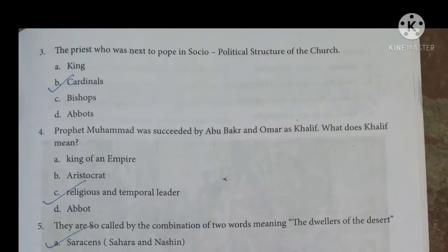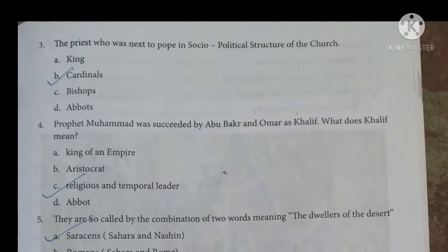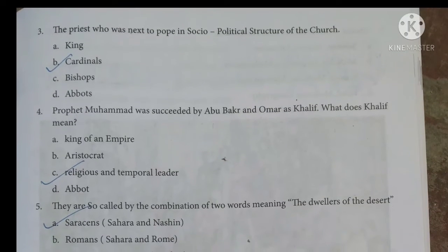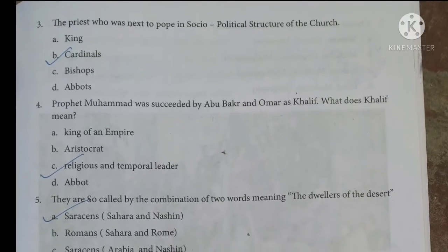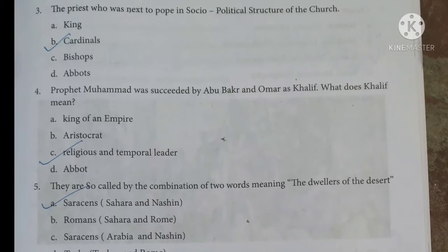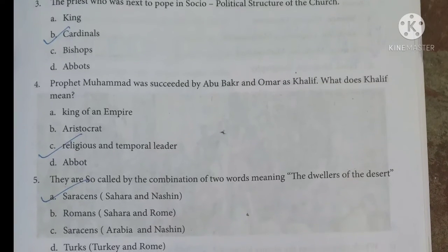The third question: the priest who was next to the Pope in the socio-political structure of the church — they were the cardinals. The answer is option B.